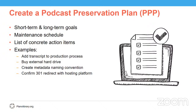Next, you will want to create a list of action items that will help ensure your files will remain accessible and functional in the long term. This can include adding transcripts to your production process, buying an external hard drive, researching and selecting cloud-based storage providers, and asking your podcast hosting platform if they provide a 301 redirect service. Finally, you will need to commit to and complete these action items. A podcast preservation plan is only as effective as the individual carrying it out. Your podcast preservation plan is a living document — it will need to be revised, updated, and reviewed on a regular basis in order to be successful. Remember, this plan is for you and the preservation of your podcast.